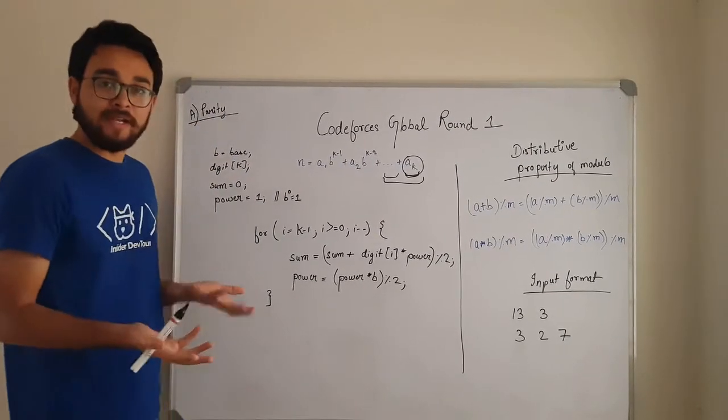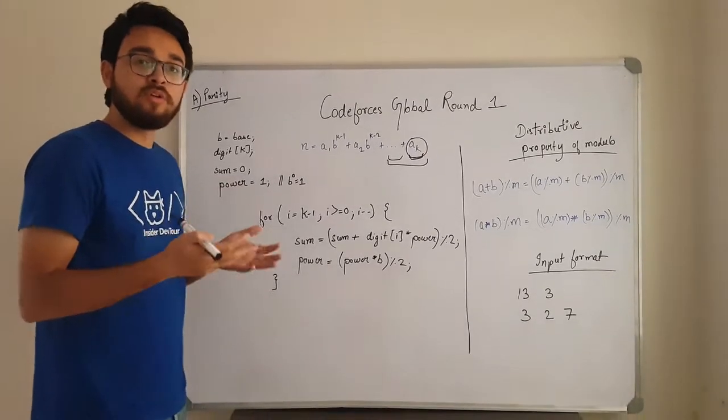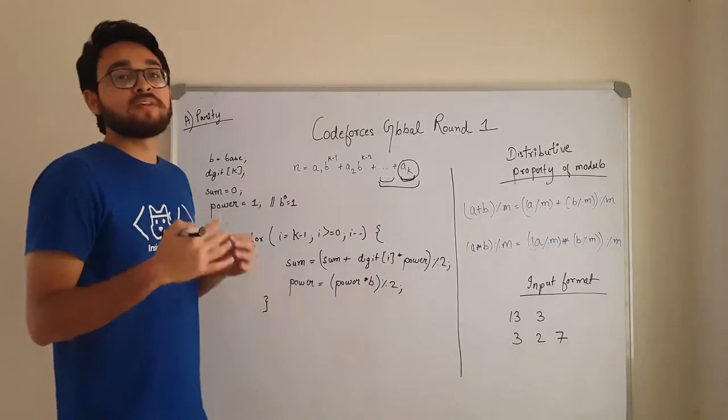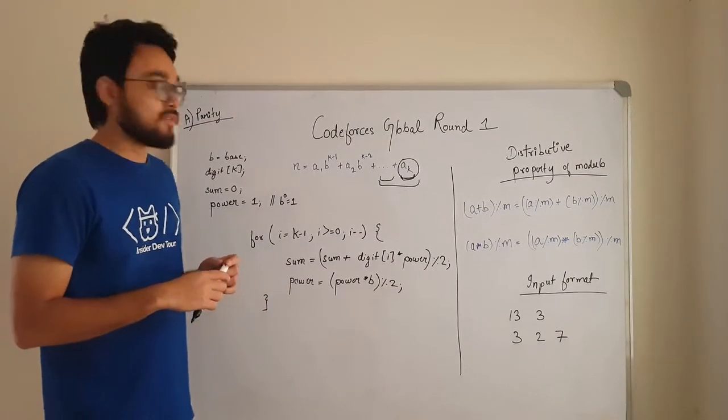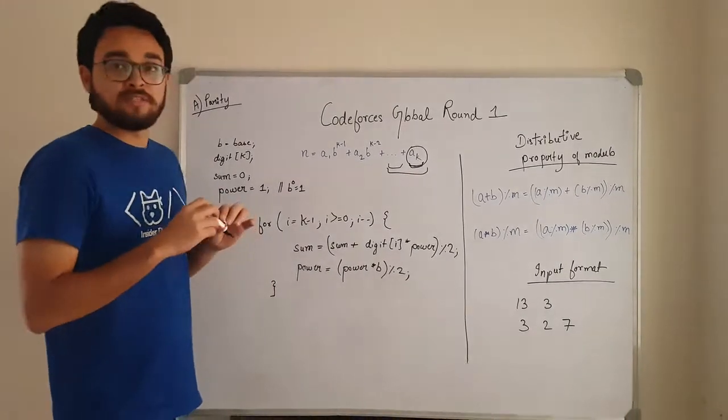So when this loop ends, our sum will have a value 0 or 1. Now if sum is 0, then the answer is even. And if it is 1, then the answer is odd. So this was all about this problem. For the next problem, see our next video.